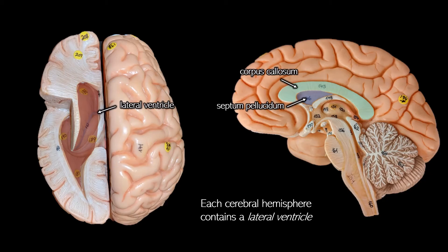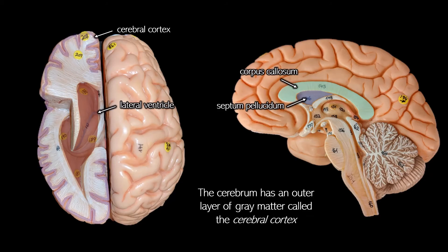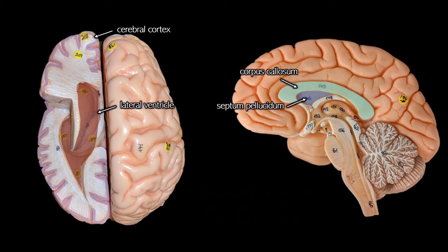Now that we've removed the top half of the brain — we're looking at a superior view here — we can see there's an outer layer of gray matter called the cerebral cortex. Gray matter is a concentration of cell bodies, so that's where neurotransmitters are being released and where synapses are. The inner layer is cerebral white matter, which consists of axon tails sending impulses to different areas within the brain.